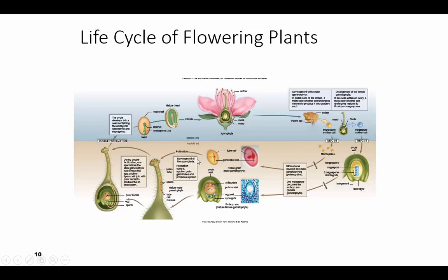Pollination happens when the pollen lands on the stigma and grows a pollen tube that comes down and unites with the egg, and double fertilization occurs. One of the sperm will fertilize the egg; the other sperm will join with the polar nuclei that are there and become a triploid.